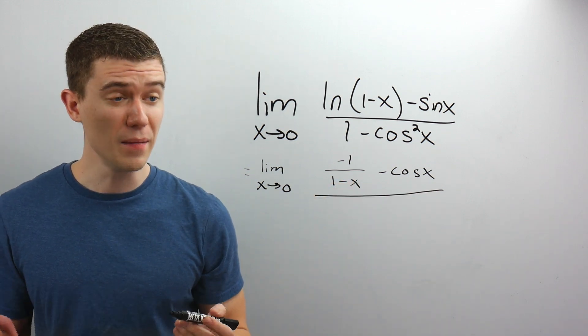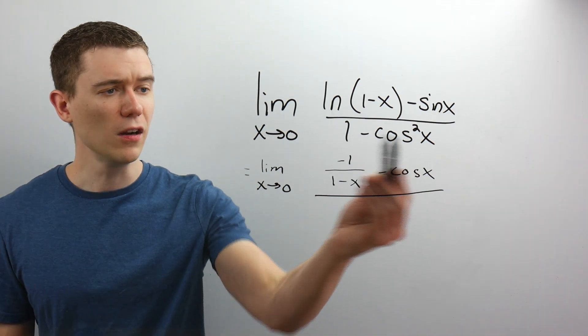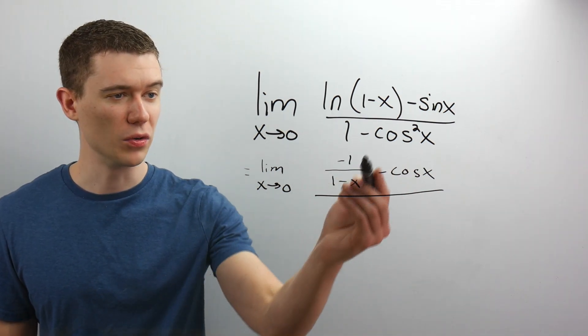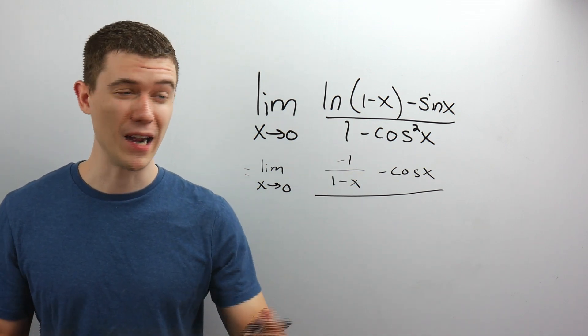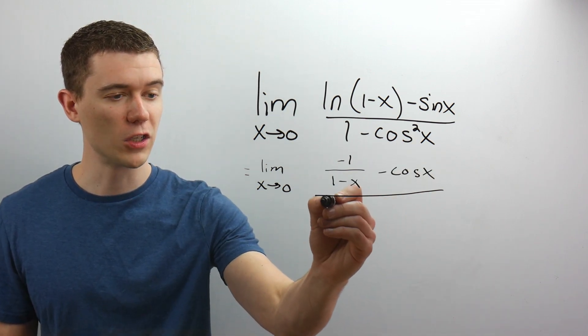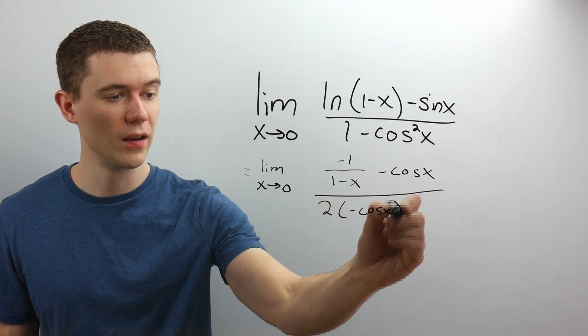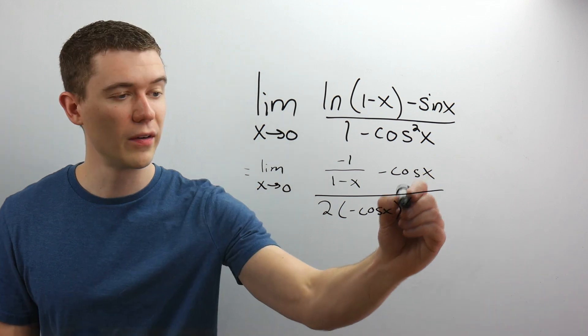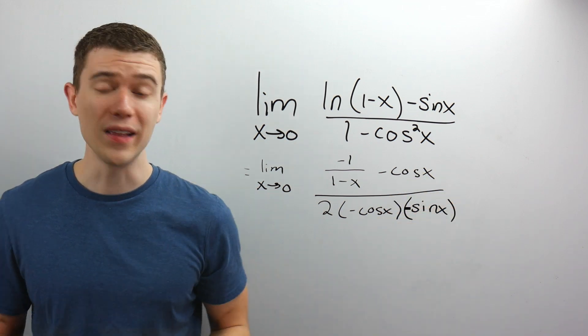And on the denominator, the derivative of 1 is 0. Fantastic. Here, we'd have to use a chain rule. So this squared, think of that as the outside function. The derivative of the square function is 2 times the function to the first power. The derivative of cosine would be a minus sine. Okay, let's try it. Let's try the limit again.